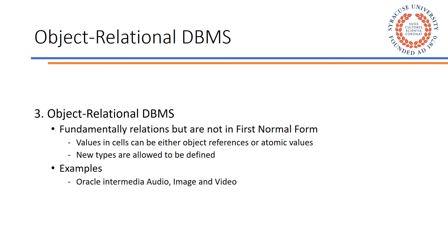These classes come with compression and manipulation facilities and are compatible with the Java media framework. Third, we have the object relational database management system. It comprises relations which are not in first normal form. Data can be either an atomic value or an object reference, and it also gives provision to define new types. Oracle's Intermedia is the best example, supporting multimedia storage, retrieval, and management of data type domains like blobs, b-files, URLs, and streaming audio and video. Intermedia also provides ORD audio, ORD video, and ORD image object types and methods for managing and performing manipulation operations on multimedia data.